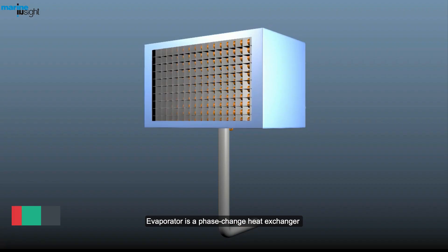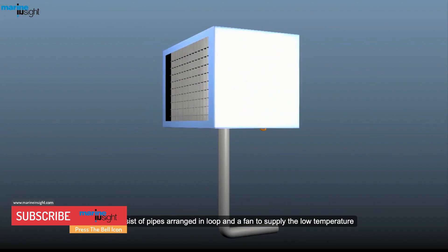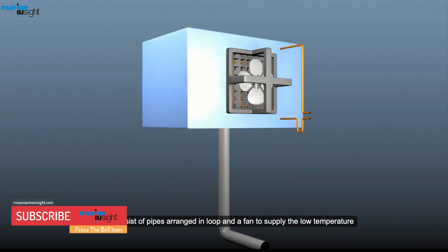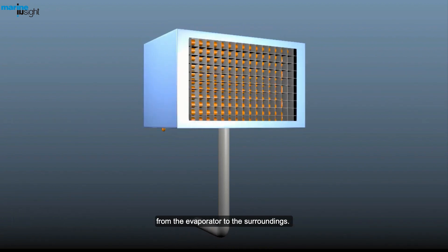Evaporator. Evaporator is a phase change heat exchanger which consists of pipes arranged in loop and a fan to supply the low temperature from the evaporator to the surroundings.